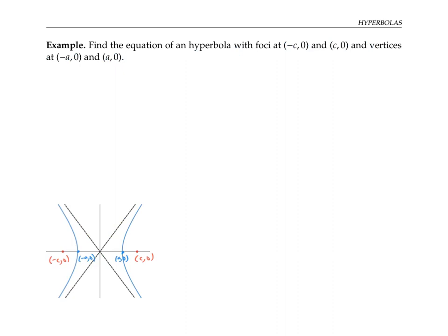Let's find the equation of a hyperbola with foci at (−c, 0) and (c, 0), and vertices at (−a, 0) and (a, 0). This hyperbola will have its center at the origin. From the distance definition, if we have a point (x, y) on the hyperbola and we take the difference of its distances to the two foci, we get a constant. We always take the positive difference: on the right branch, we subtract the shorter distance to the right focus; on the left branch, we subtract the shorter distance to the left focus.